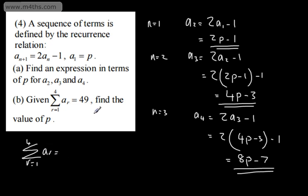Well that is going to be now on here a1 plus a2 plus a3 plus a4. So we know that a1 is going to be p, we know that a2 is going to be 2p minus 1, so 2p minus 1, plus a3 which is 4p minus 3, and then we're going to get plus a4 which is 8p minus 7.